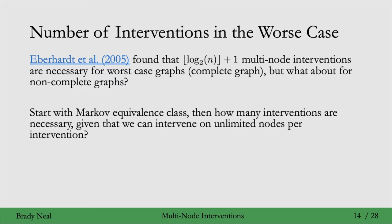The answer depends on the largest clique in the graph. A clique is the largest set of nodes in the graph where there is an edge between every pair of nodes. In a complete graph, the largest clique is the whole graph — the number of variables. But in a non-complete graph, the largest clique will be smaller than the total number of nodes.